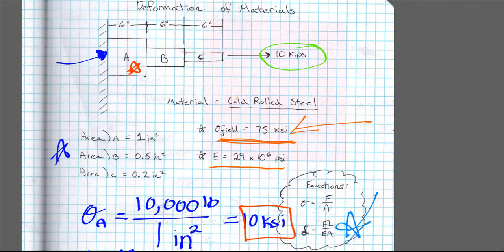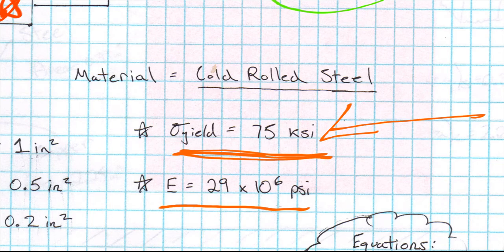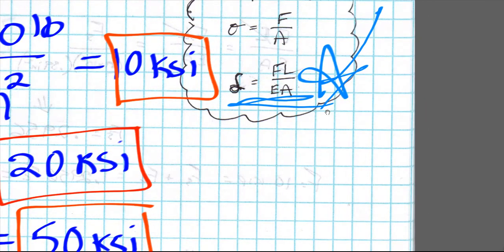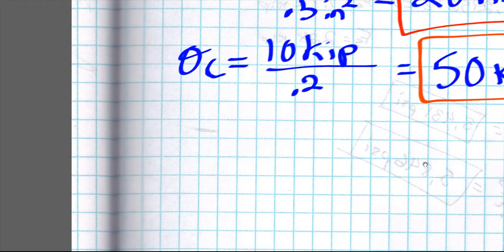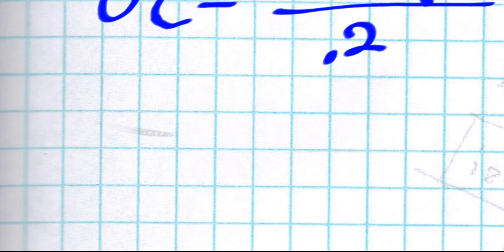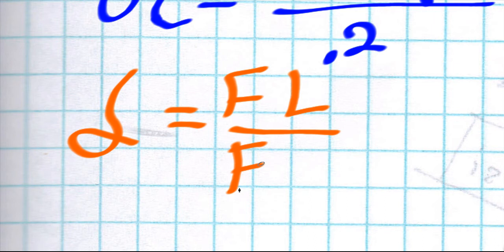So we know that the material will not yield and it's going to be functioning as we would expect. Thus it is applicable to use this equation down here, the deformation one. So let me zoom in for us since we're going to use this function right here. Let's just shoot on into that. I'm going to use a different color, I'm going to use orange.